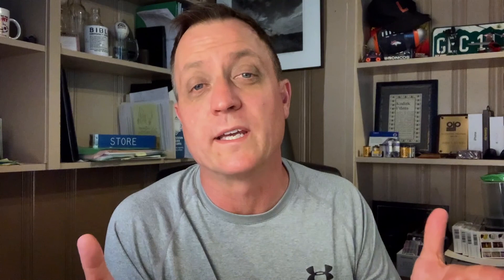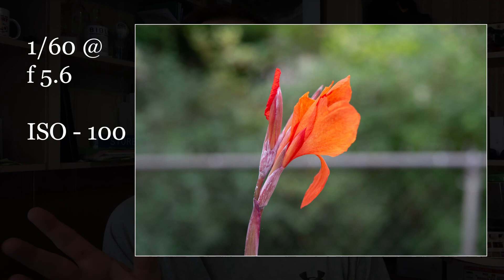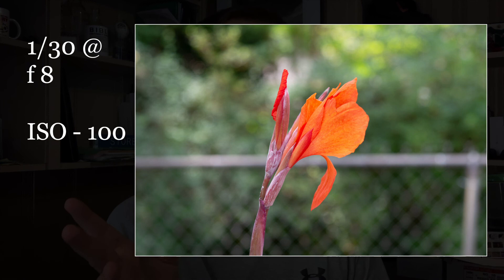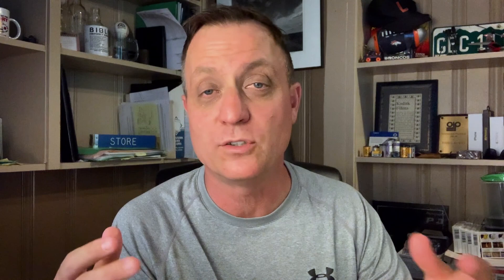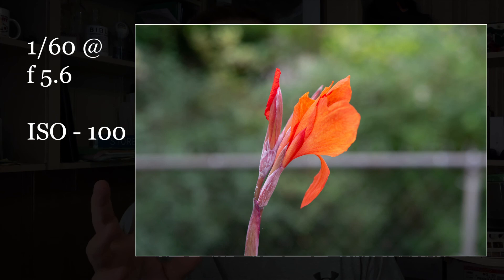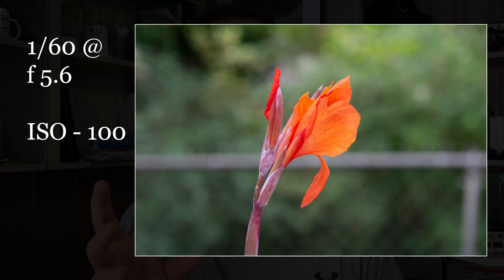Here are the three shots — I'll show them on screen now, straight out of camera with nothing done in Lightroom or Photoshop. First one: 1/60th of a second at f/5.6. Second: 1/30th of a second at f/8. Third: 1/8th of a second at f/16. You'll notice the depth of field starts to change, but the overall exposure is the same throughout.